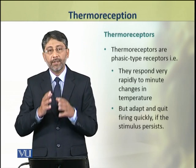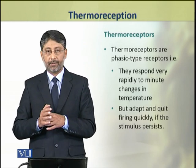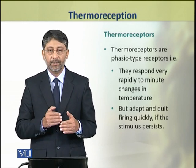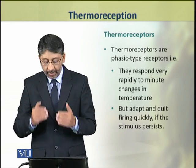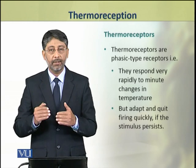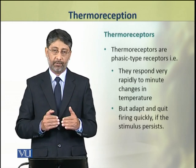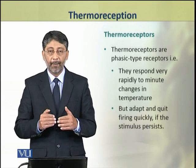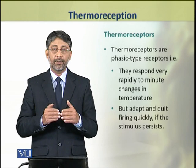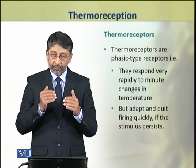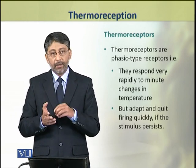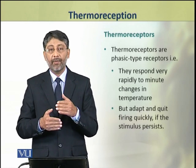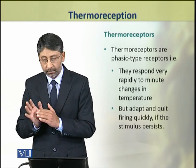Thermoreceptors are phasic type of receptors. These phasic receptors are highly sensitive and they respond rapidly to minute changes in temperature. However, these receptors adapt very quickly and quit responding if the stimulus persists — they will respond rapidly at first, but then they will adapt and will not generate impulses.